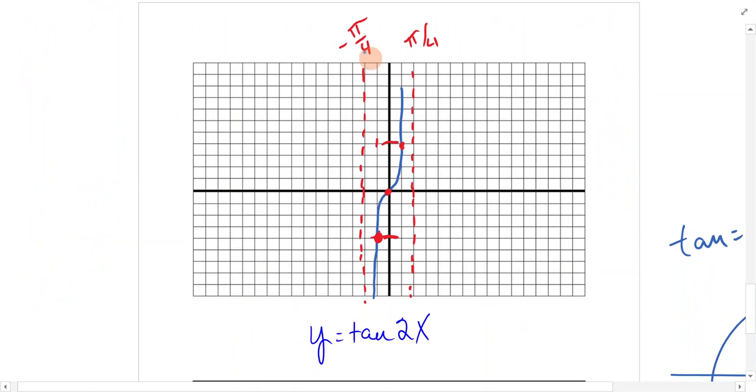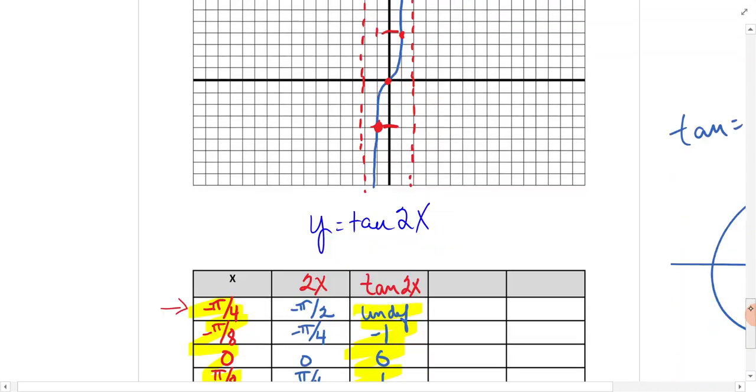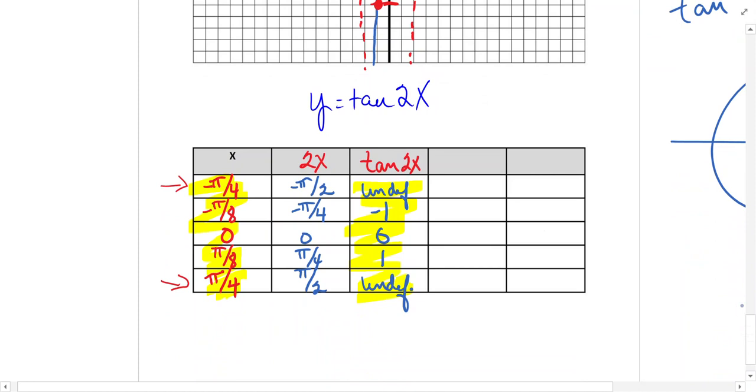We come over to our graph and put dotted lines at negative pi over 4 and pi over 4. You put your boundaries, your asymptotes here and here, then do what we did before. What's halfway between negative pi over 4 and pi over 4? That'd be 0. What's halfway between 1/4 and 0 or negative 1/4 and 0? That's negative 1/8. Halfway between 0 and 1/4 is 1/8. So we've got our x values.